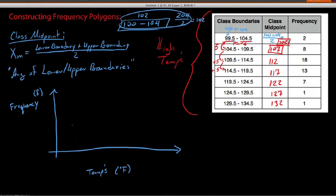instead of putting on our class boundary information as we would with the histogram or bar graph, we're going to put on our class midpoints. So the very first class midpoint, we say there's 102. 102. We say 107. We got 112.